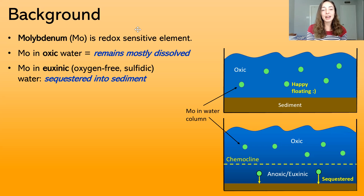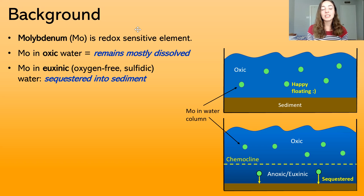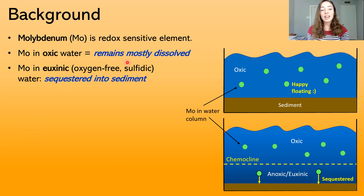To give a little background on why molybdenum is great for reconstructing past ocean biogeochemistry — or the biological, chemical, and geological conditions — molybdenum is a redox-sensitive element. This means molybdenum behaves differently in oxidizing versus reducing conditions, or well-oxygenated versus oxygen-free and sulfidic conditions, which are called euxinic conditions.